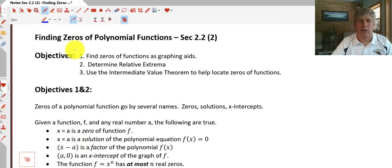Welcome back. The objectives of this video are to find the zeros of functions as graphing aids, to determine the relative extrema (the relative maximum and minimum of a function), so they might be the bumps or the peaks in a function, and also to use the intermediate value theorem to help locate zeros of functions.